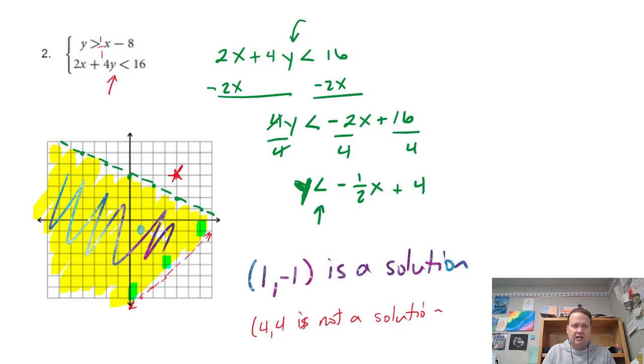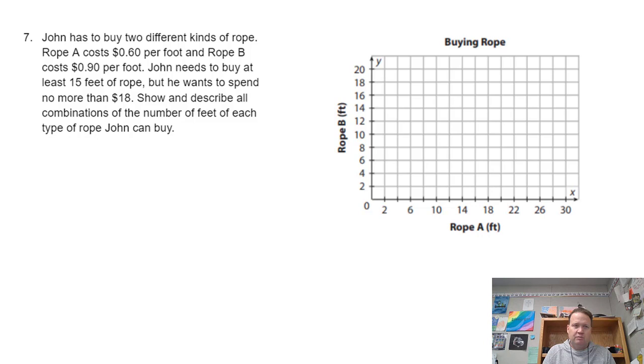And that's a little bit of review there. But let's take a look at one of the word problems. This is going to be where it gets a little tricky. This is going to be new material for us. Let's take a look. It says John has to buy two different kinds of rope. He's got rope A and he's got rope B. And so if I identify rope A, rope A is down here, and that's on the x-axis. So x is going to be rope A, which means y is going to be rope B.